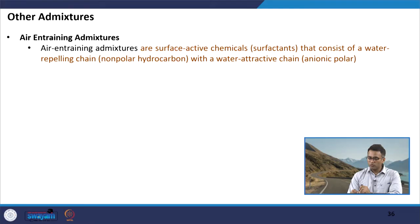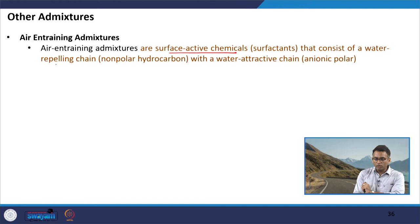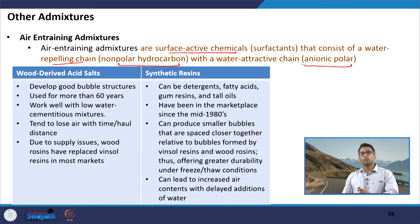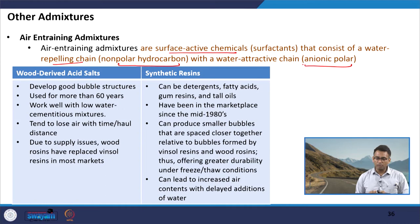Air entraining admixtures are usually surface-active chemicals — a type of surfactant with two parts. One part is a water-repelling non-polar hydrocarbon chain that is hydrophobic in nature. The other part is a hydrophilic anionic polar group. Various products are available: wood-derived acid salts and synthetic resins, both of which can be used as air entraining admixtures.